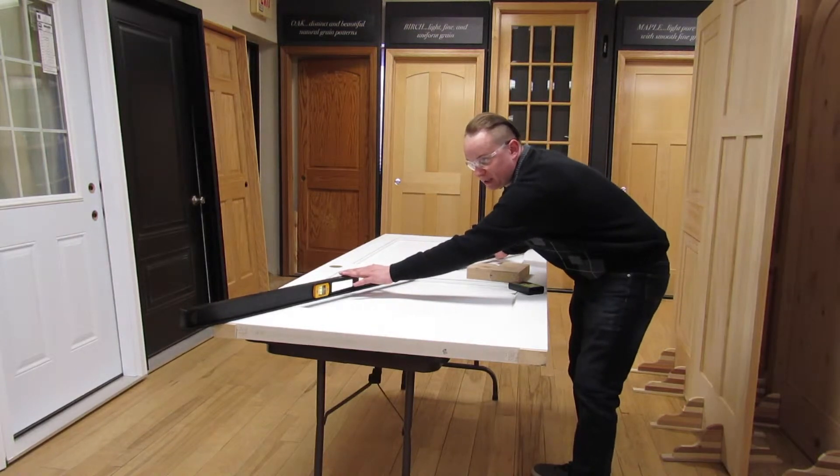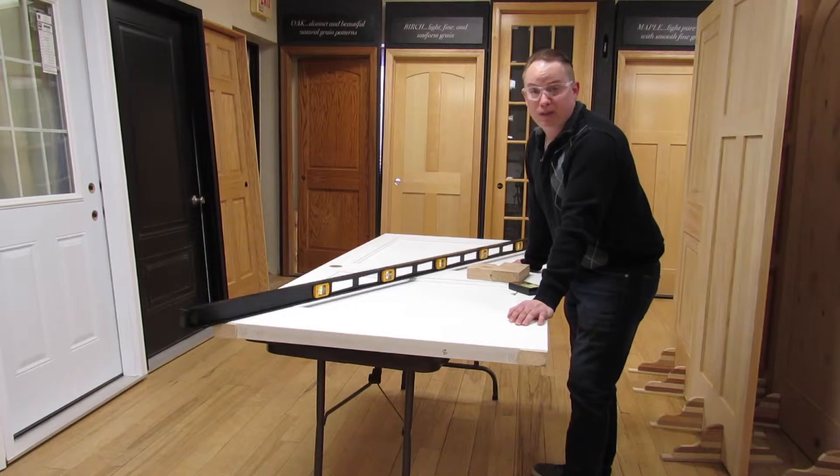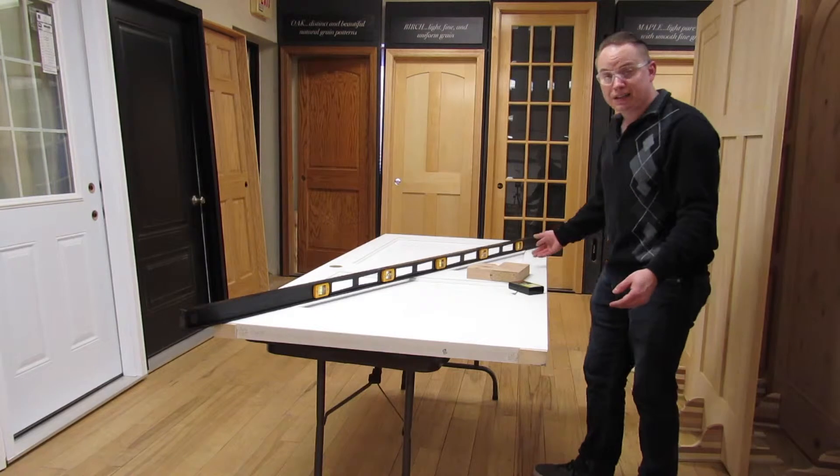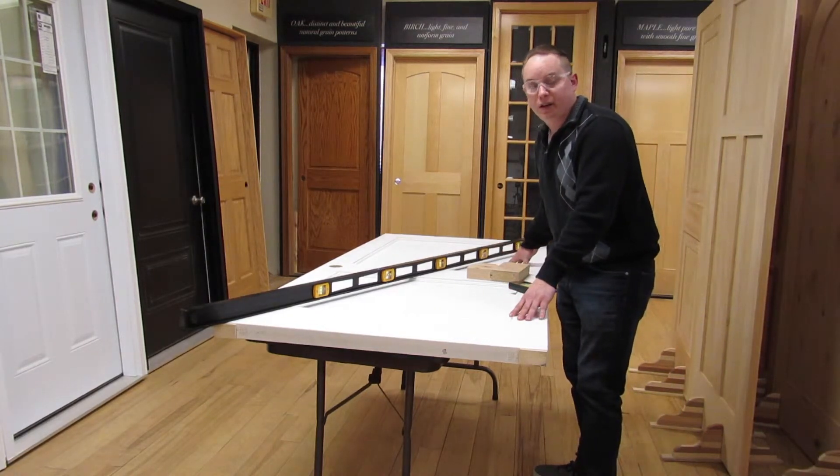This one I pre-checked already. It's about 3/64s. So this one would be okay yet, especially because this door is going to get fixed on the hinge side and that's going to be fixed. So it's going to help straighten it back out.